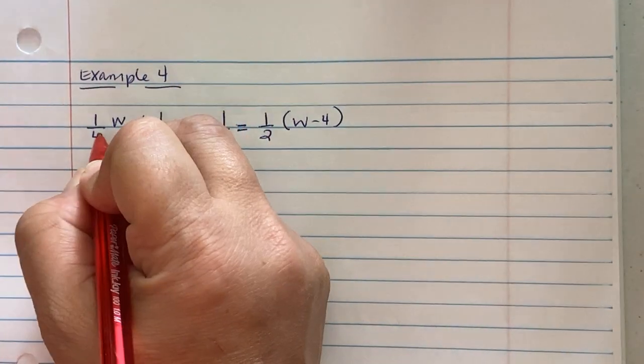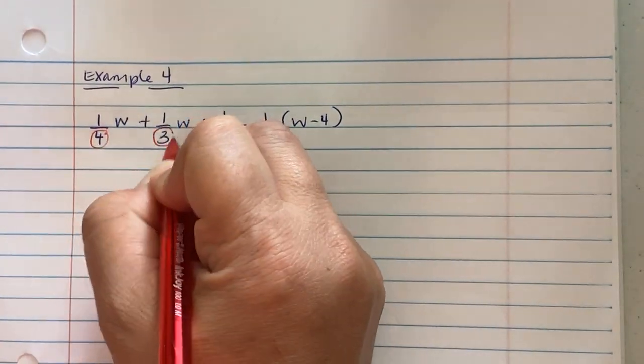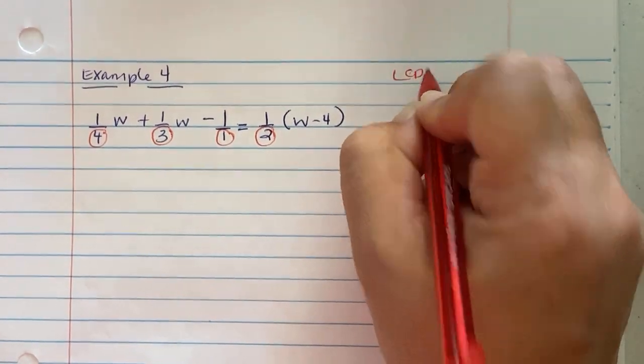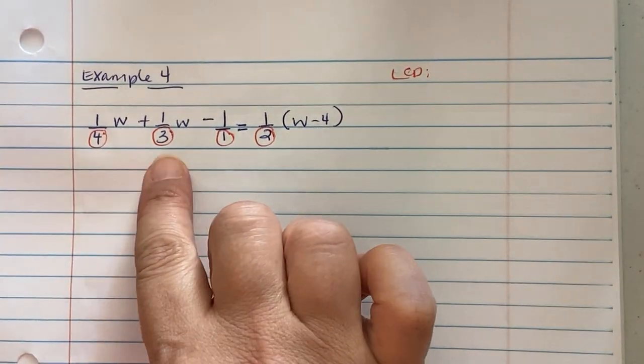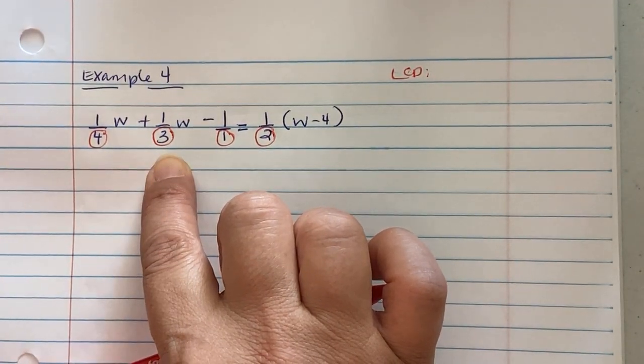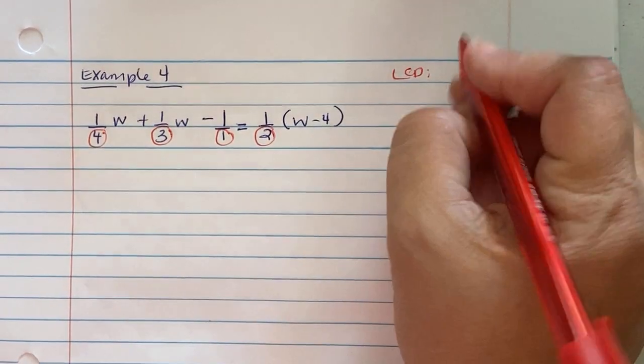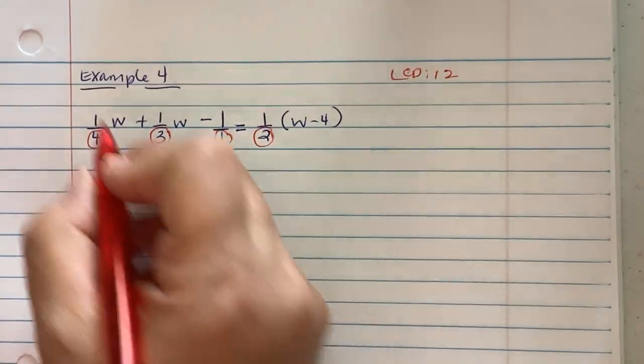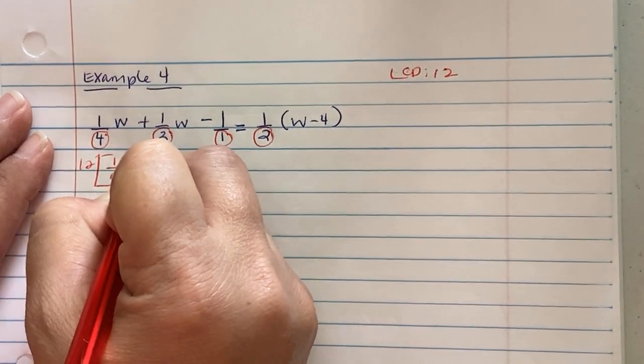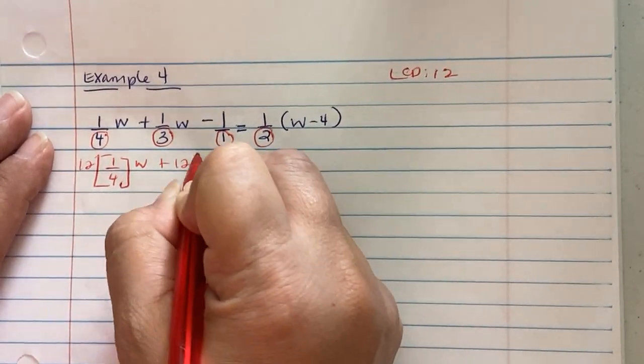Now I'm going to circle my denominator, so I see a 4, a 3, a 1, and a 2. So we need to come up with an LCD, a number that 4, 3, and 2 all go into. Well, 4 times 3 is 12, 12 is divisible by 2, so my LCD is a 12. So you're going to use 12 to get rid of your fractions, so you're going to put 12 on the outside of each of your brackets.